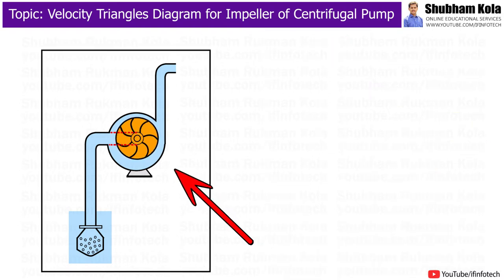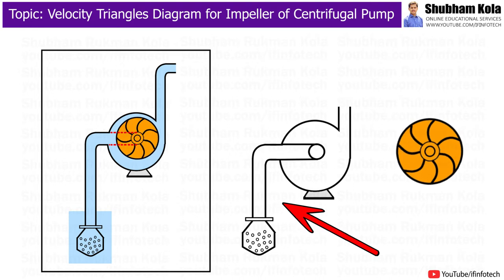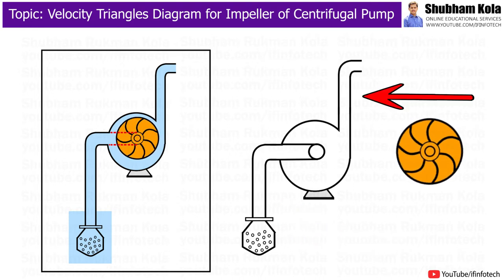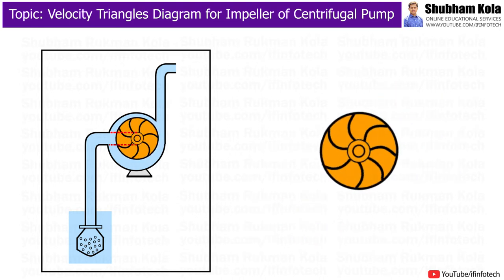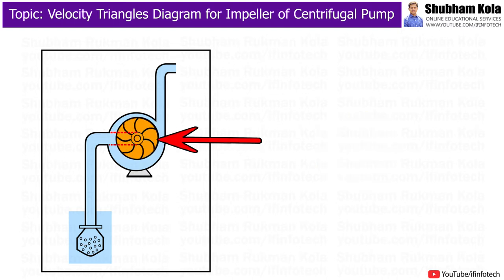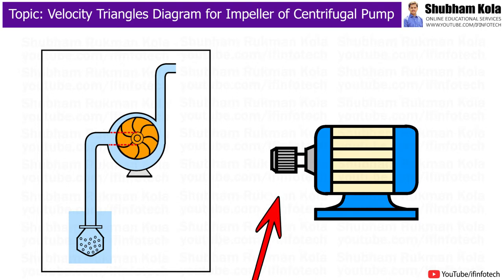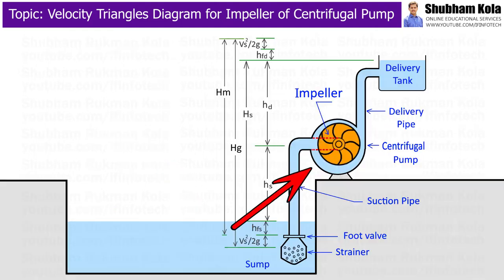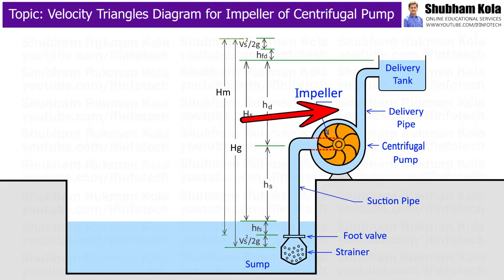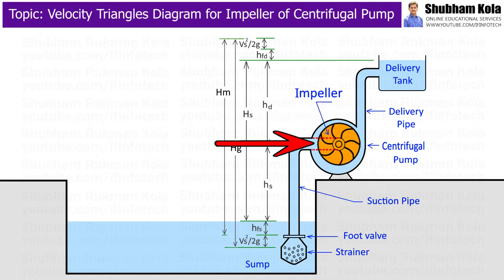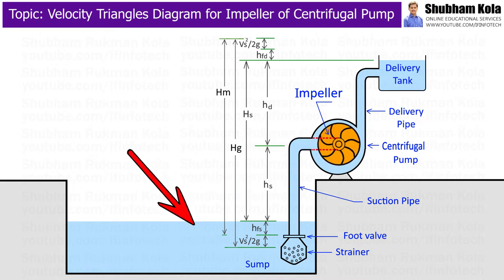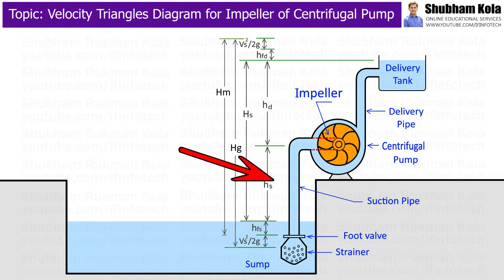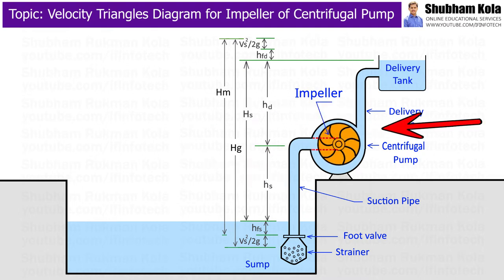The centrifugal pump consists of an impeller, casing, suction pipe with strainer and foot valve, and delivery pipe. The impeller is a rotor having a series of backward curved blades, mounted on a shaft which is usually coupled to a motor. The motor provides the required input energy to rotate the impeller. The impeller is enclosed in a volute-type casing with a delivery pipe on one side and the suction side arrangement called the eye of the impeller. The pipe connecting the sump to the eye of the impeller is called the suction pipe, and the delivery pipe connects the outlet of the pump to the point where it delivers liquid to the required height.